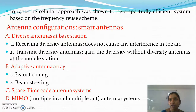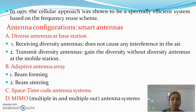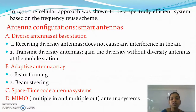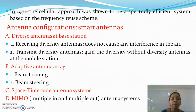Coming to antenna configurations as a consideration for spectrum efficiency: smart antennas must be selected to improve capacity and radiation pattern. Diversity antennas at the receiving side do not cause interference, and diversity antennas can also be used at the transmit side at the mobile station. Adaptive antenna arrays provide beam forming, beam steering, and focusing of the beam, all affecting radiation pattern and efficiency. Space-time code antenna systems and multiple-input multiple-output (MIMO) antenna systems also come into effect for spectrum efficiency.